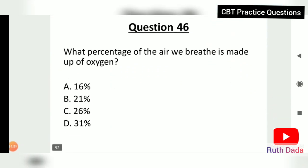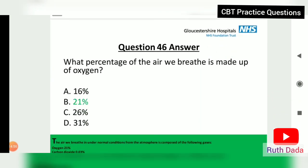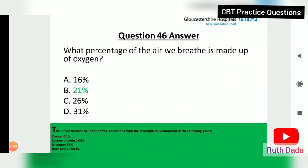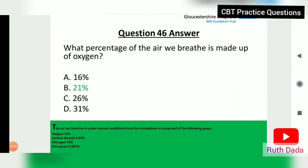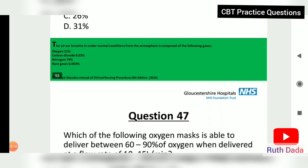Question 46: What percentage of the air we breathe is made up of oxygen? 21 percent. The air we breathe in normal conditions is composed of oxygen 21%, carbon dioxide 0.03%, nitrogen 79%, and rare gases 0.003%.